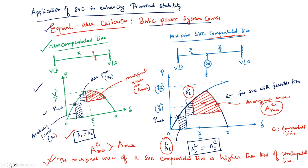If you recall from the last lecture, I discussed the equal area criteria for an uncompensated line and also for a midpoint SVC compensated line. For the uncompensated line, this is the P-delta curve, where P means power transfer and delta is the angular difference of the sending end bus and receiving end bus. Depending upon the loading of this line, the value of delta will change.